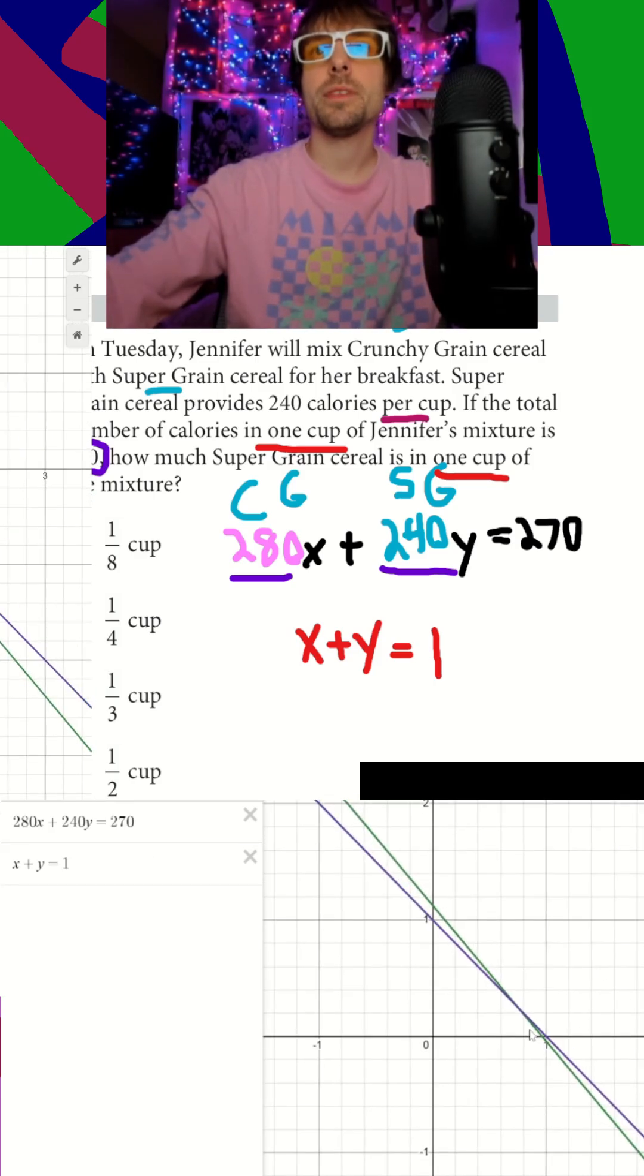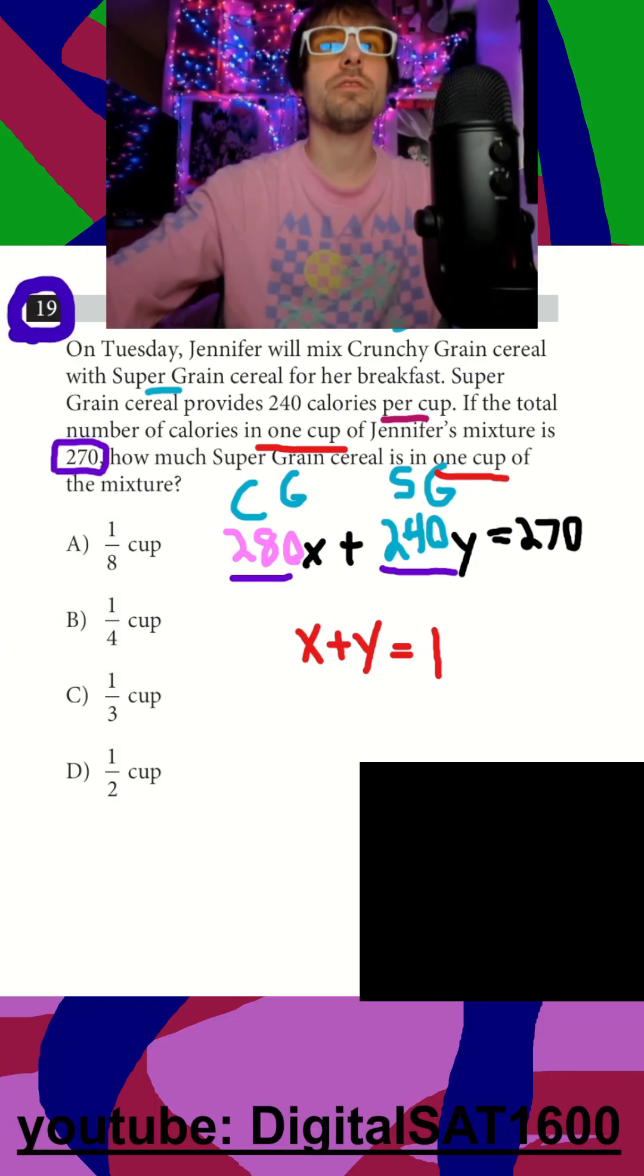Again, I look for my intersection point, and it looks like that's going to be 0.75 and 0.25. So let's go ahead and get rid of that. 0.75 and 0.25. So that's for X. That's for Y. And they are looking for how much super grain. That's going to be our Y, and that's going to be B here.